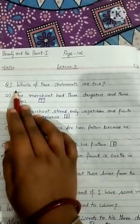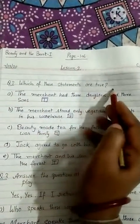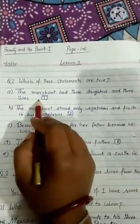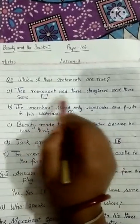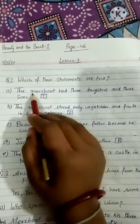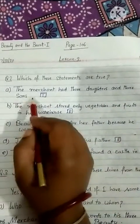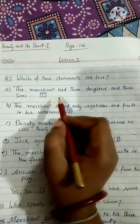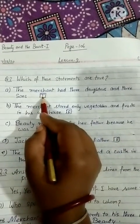Question number 2 is given like this: 'Which of these statements are true?' Statement A: The merchant had 3 daughters and 3 sons. Is it true or false? As you have read the story, you all know that the merchant has 6 children — 3 daughters and 3 sons. So the statement is true, and we can mention T in the box.